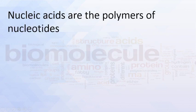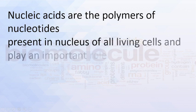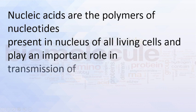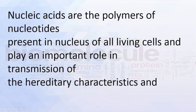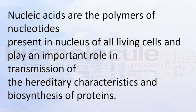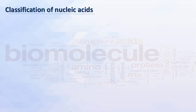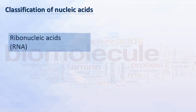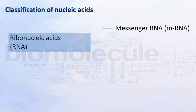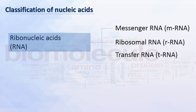Nucleic acids are the polymers of nucleotides present in the nucleus of all living cells and play an important role in transmission of hereditary characteristics and the biosynthesis of proteins. Classification of nucleic acids: ribonucleic acids, called RNA, are divided into three categories — messenger RNA, ribosomal RNA, and transfer RNA.